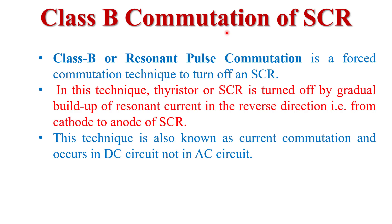Class B commutation is a type of forced commutation, also called resonant pulse commutation, because here we use an inductor and capacitor in series to make a resonant circuit. This resonant circuit generates a resonant pulse that turns off the SCR. This technique is also known as current commutation because the resonant circuit produces a resonant current in the reverse direction of the SCR to turn it off. Current commutation occurs in DC circuits, not AC circuits.